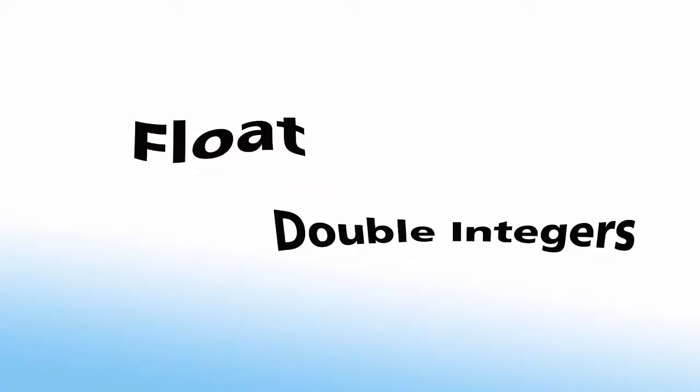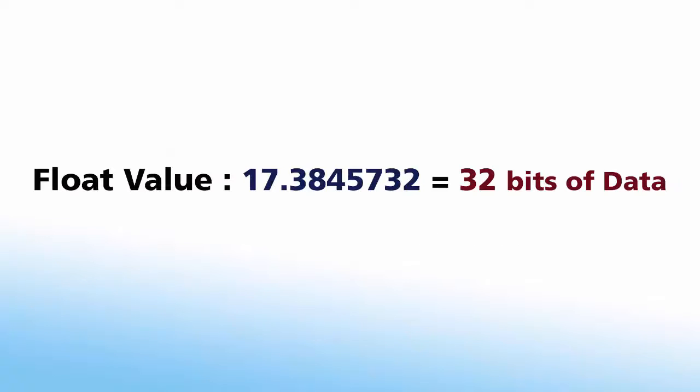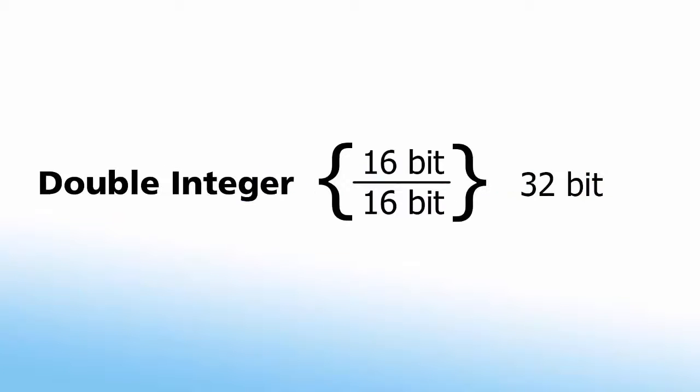32-bit data is comprised of two different data types: floats and double integers. Float values are any real number with a decimal point that is represented by a 32-bit register. Double integers or dints are simply two 16-bit values stacked together, also represented by 32 bits.